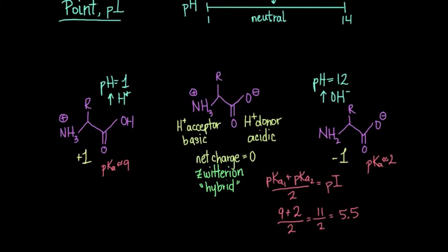But say our amino acid has a side chain or an R group that is also a functional group—then we would also have to take the pKa for that group into account when we calculate the isoelectric point.